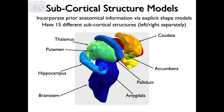The specific structures that we can use are illustrated here and they are quite specific. We have 15 structures — that is seven pairs which are separated into left and right halves, and then the brain stem. These are the only ones that this particular tool is able to do.